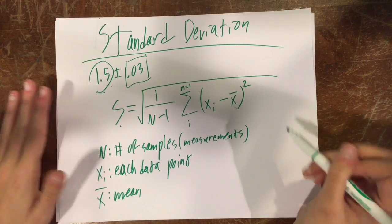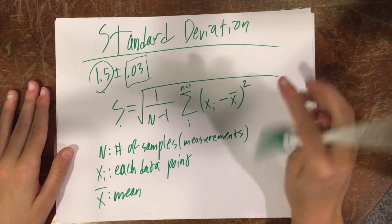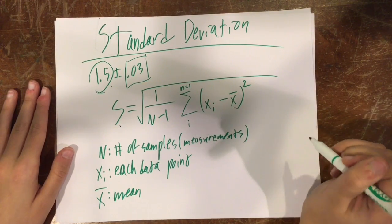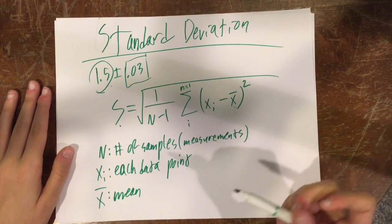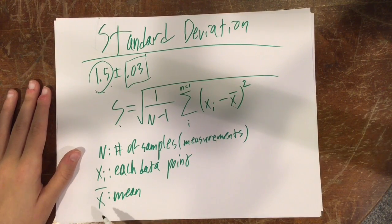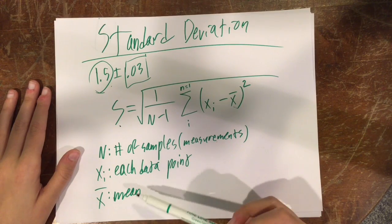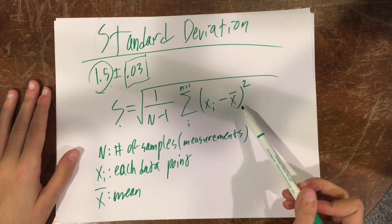xi, in case you forgot, stands for each individual data point you have. And this symbol, this x with a line, this is not a vector hat, it is just a straight line, and it stands for the mean of all your data points.